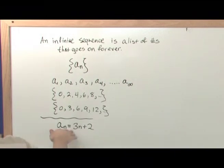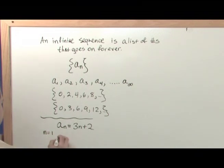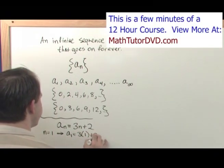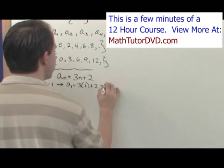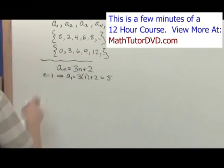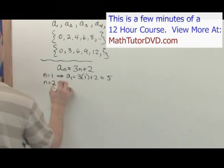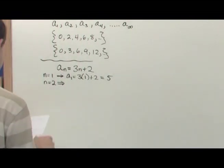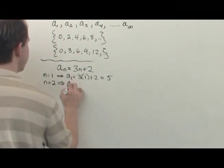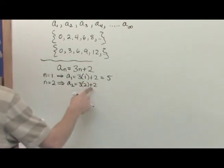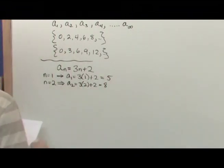So if the problem said write down the elements of this sequence, all you would do is say for n equals 1, which is the first element, a sub 1, it's just going to be equal to 3 times 1 plus 2, which equals 5. So a sub 1 is 5 — that's the first element in the sequence. And a sub 2 would be 3 times 2 plus 2, which is 6 plus 2, so the second element is 8.